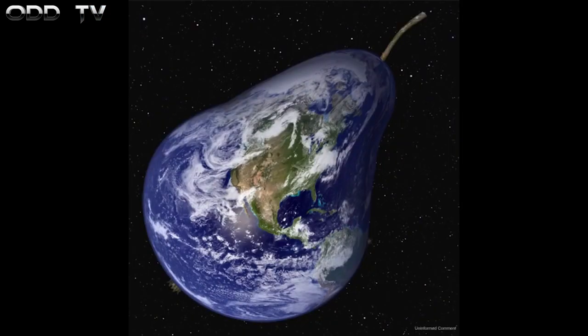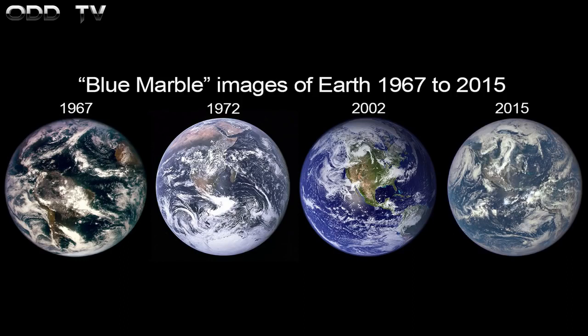But not only that, it's slightly wider below the equator than above the equator. A little chubbier. It's like pear-shaped. So apparently it's a pear-shaped oblate spheroid.